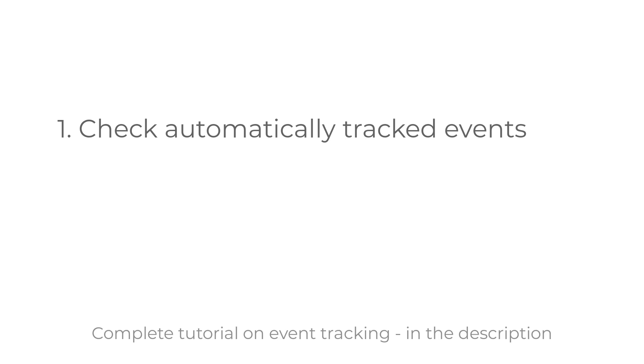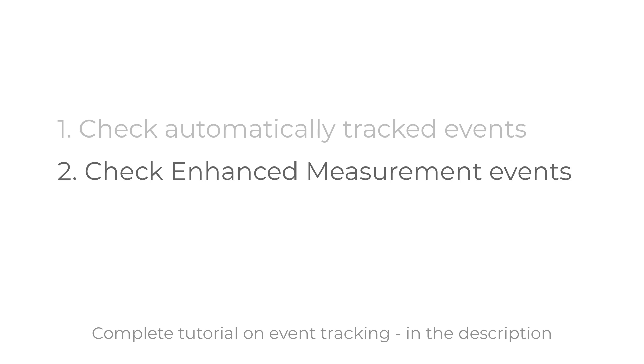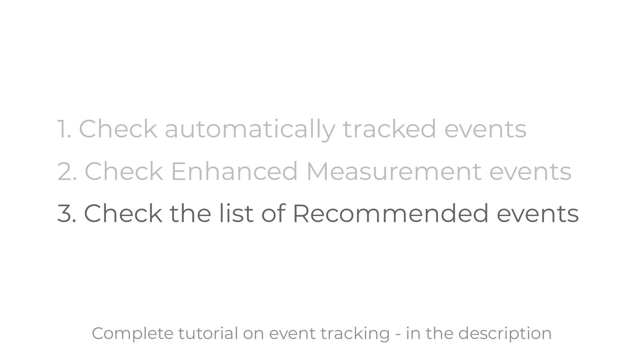When you want to start tracking a particular event and send it to GA4, first you should come up with an event name and parameters. Instead of just randomly coming up with something, you should first check whether GA4 is not tracking that event automatically. Then you should take a look at enhanced measurement possibilities. If you could not find your event there either, then take a look at the list of recommended events in GA4. Recommended events allow GA to better understand what kind of data you are sending to it.